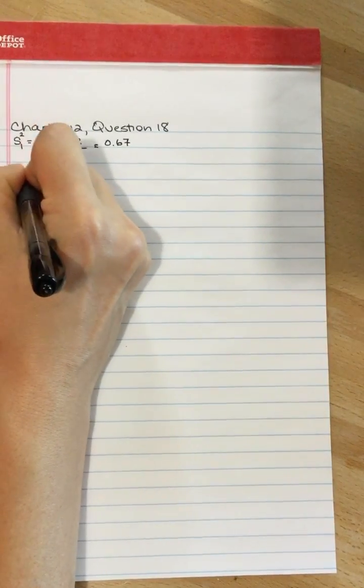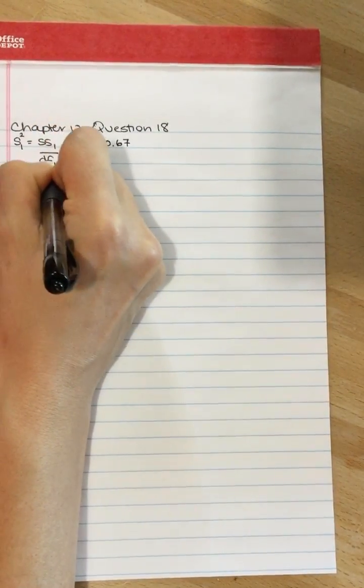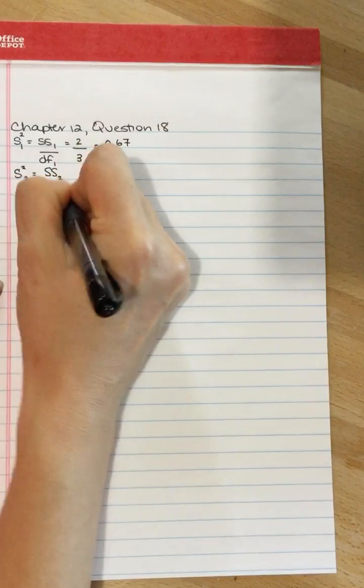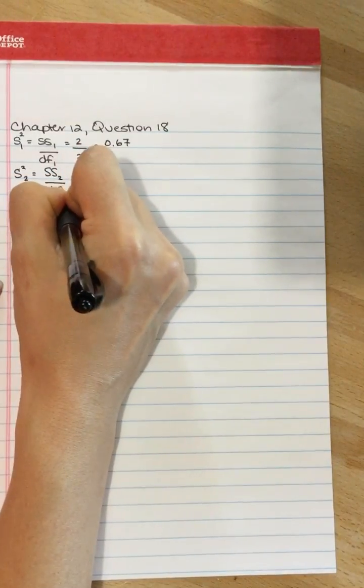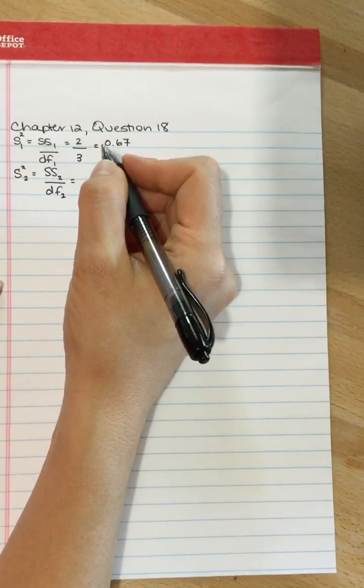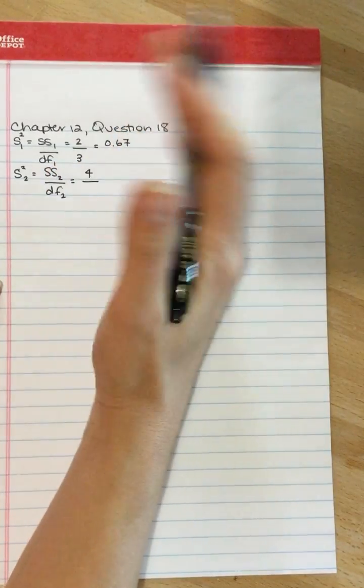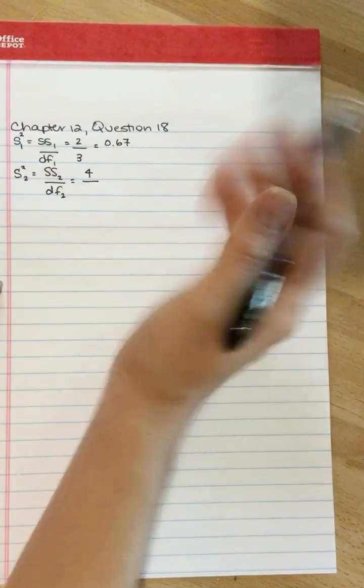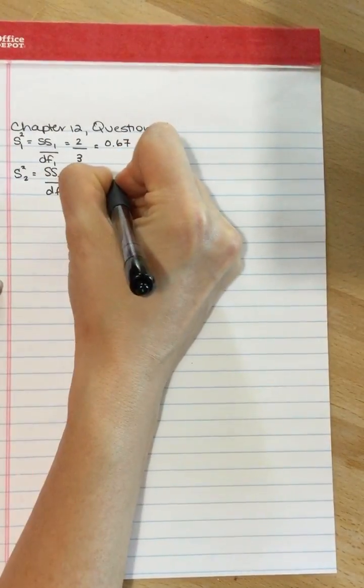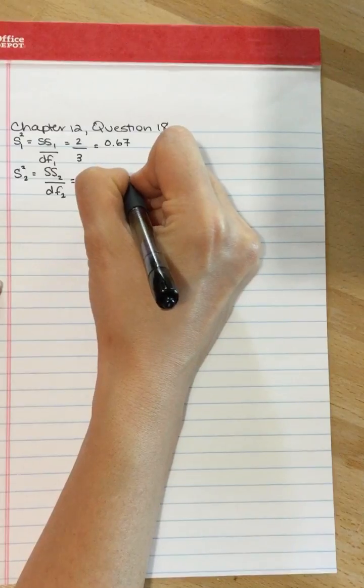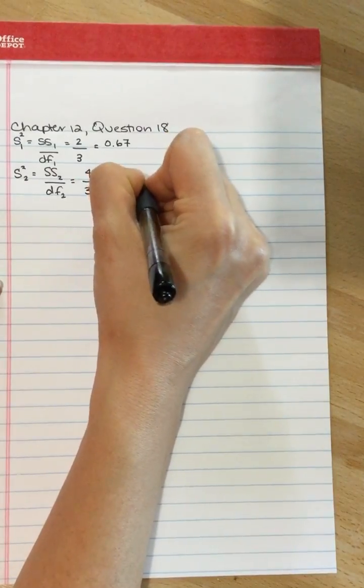I'm going to do the same for treatment 2, but with sum of squares 2 divided by the degrees of freedom 2. The sum of squares for this group was 4. The degrees of freedom, each group has 4 individuals, so the degrees of freedom stays the same. And the variance here is 1.33.